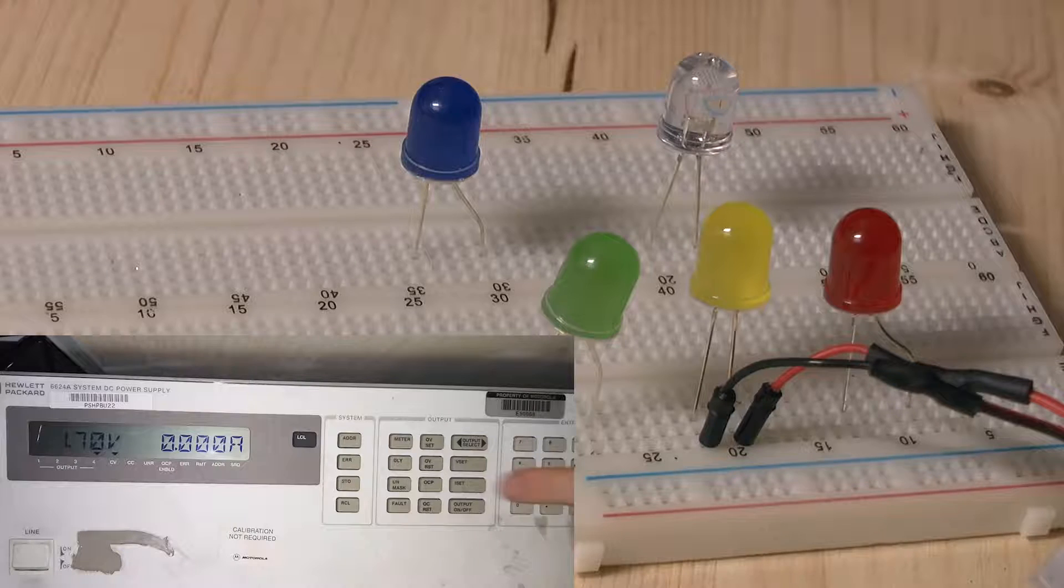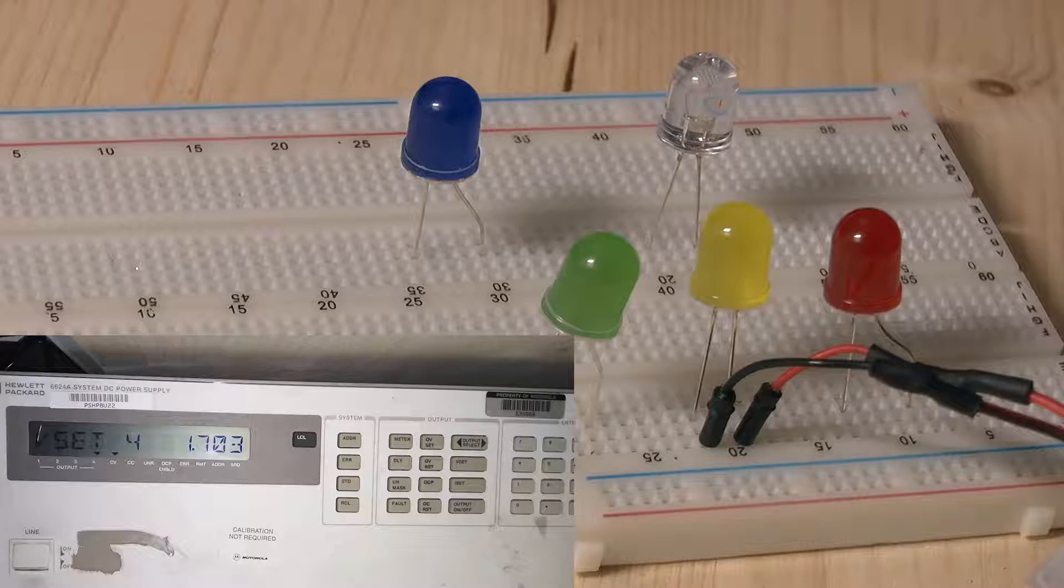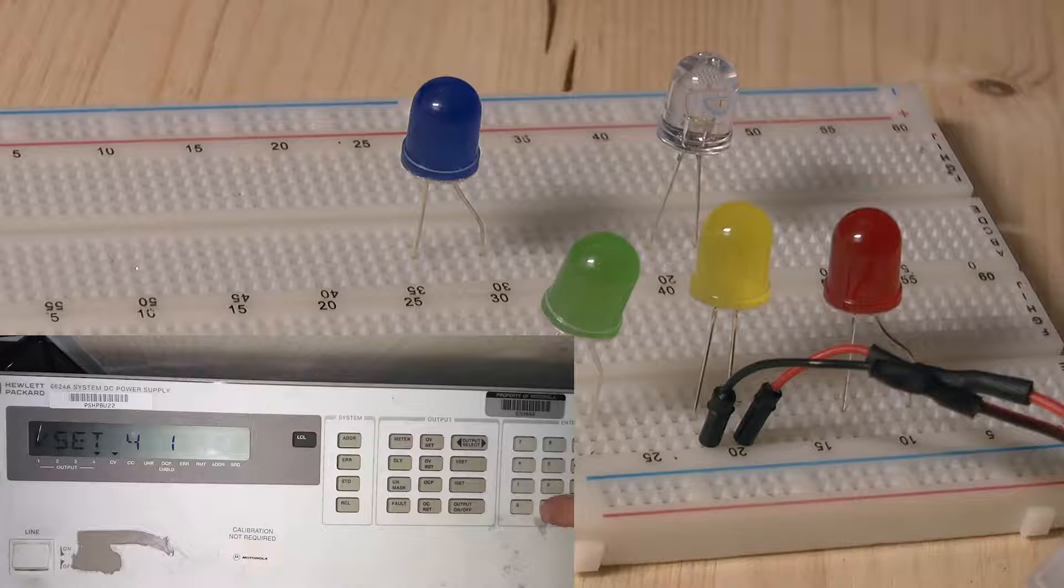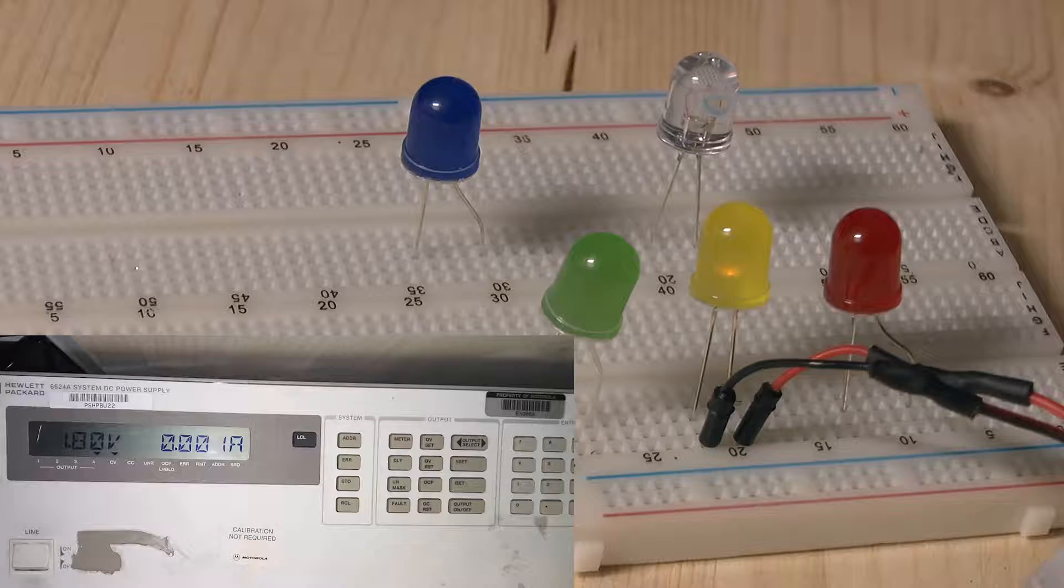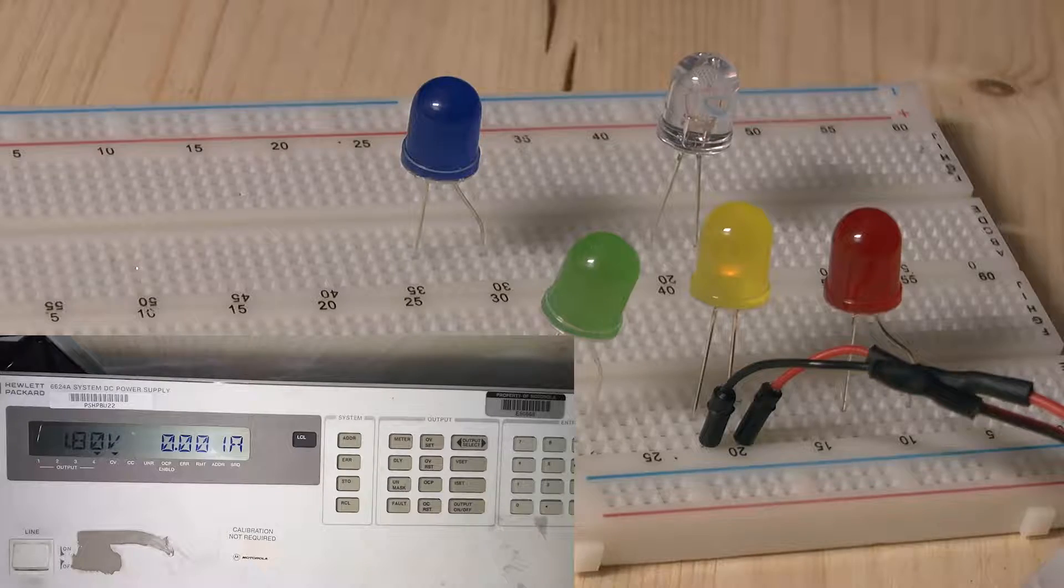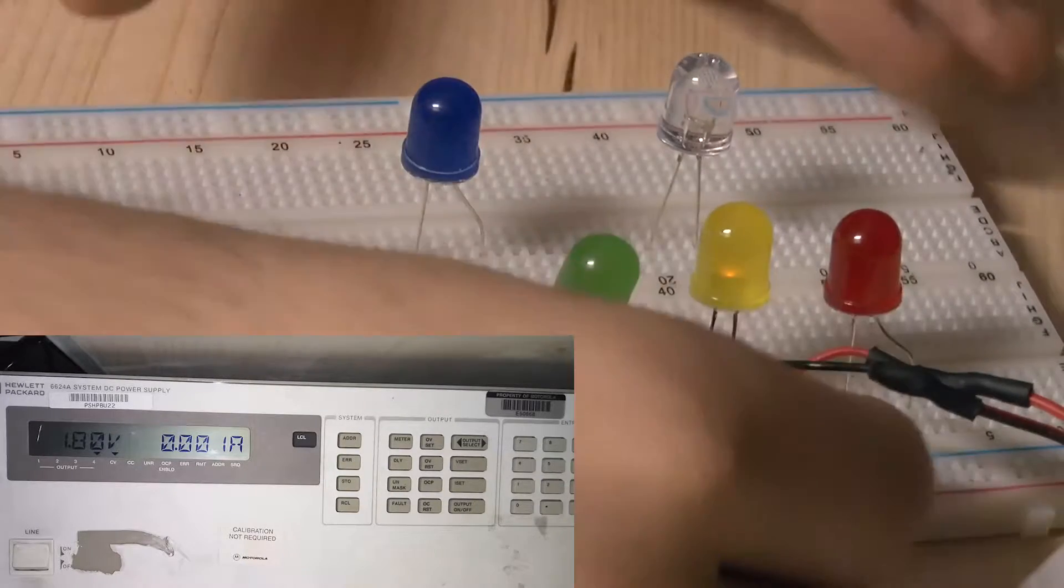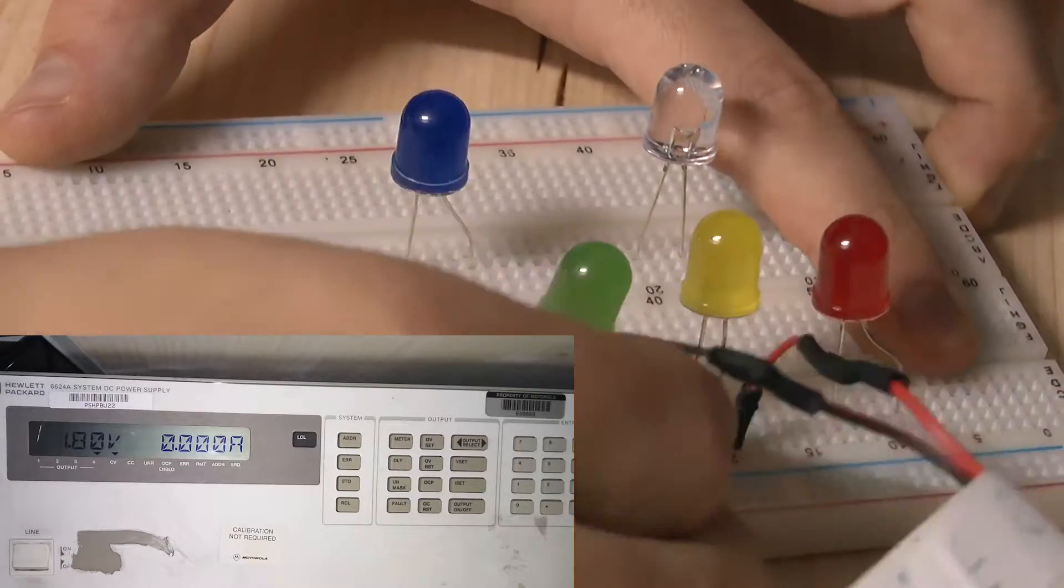We see here, I have to hit VSET and I am giving 1.8V. And we see a very slight glimmer. Let's move on to the green LED.